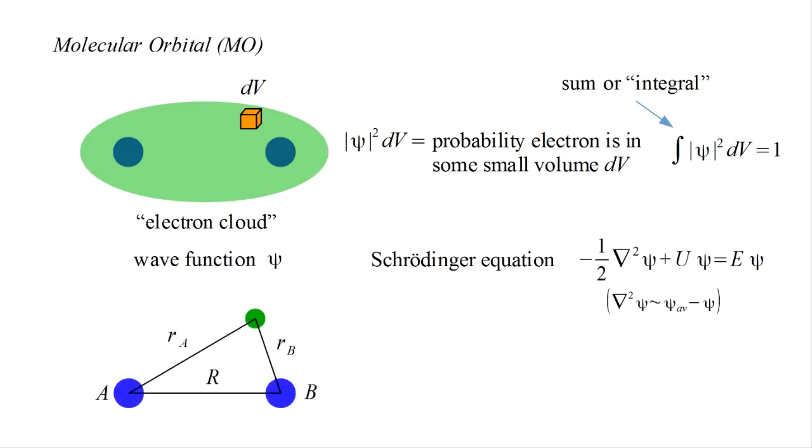We label the protons A and B, the distance between them R, and the distance from the protons to the electron as R_a and R_b. The expression for potential energy now has three terms. The repulsion between protons contributes positive one over R. The attraction between the electron and proton A contributes minus one over R_a, and between the electron and proton B minus one over R_b. So substituting this expression for U, we have the specific form of the Schrödinger equation for the hydrogen molecule ion.